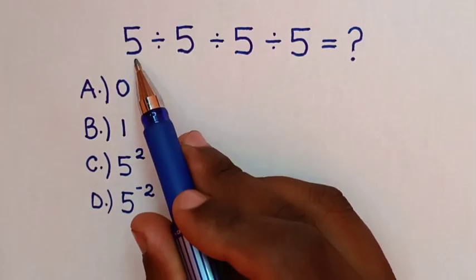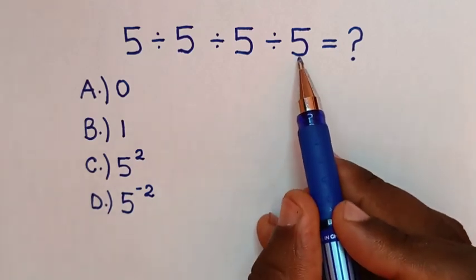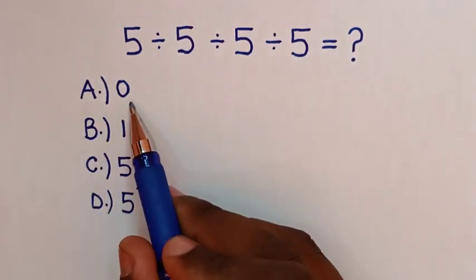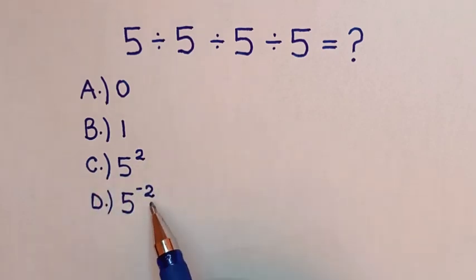Hello! How to solve 5 divided by 5 divided by 5 divided by 5? Select between the answers: a) 0, b) 1, c) 5 to the power of 2, d) 5 to the power of negative 2.